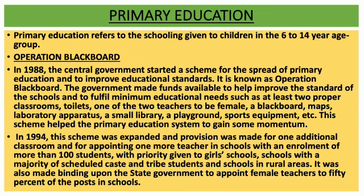The scheme started in 1988 is known as Operation Blackboard. The government made funds available to help improve the standard of schools and to fulfill minimum educational needs, such as at least two proper classrooms, toilets, one of the two teachers to be female, a blackboard, maps, laboratory apparatus, a small library, a playground, and sports equipment. This scheme helped the primary education system to gain momentum.